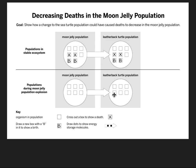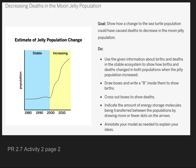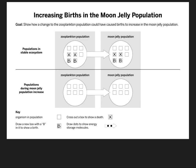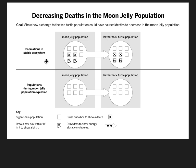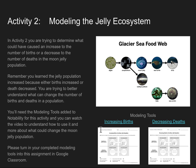You can do this on Notability. For each of these graphs — the increasing births and the decreasing deaths — just make sure that you add your copy back into Google Classroom so you get credit for this activity. Remember, both documents are available on the slide; you can add them to Notability and then turn them into Google Classroom. Thank you.